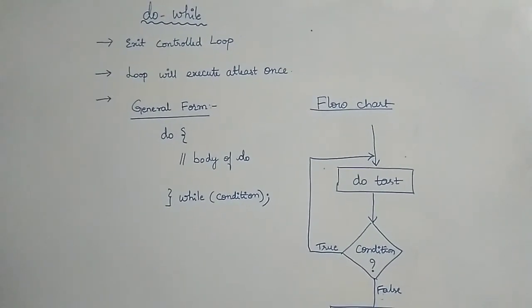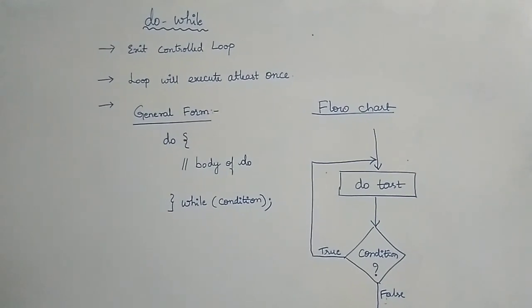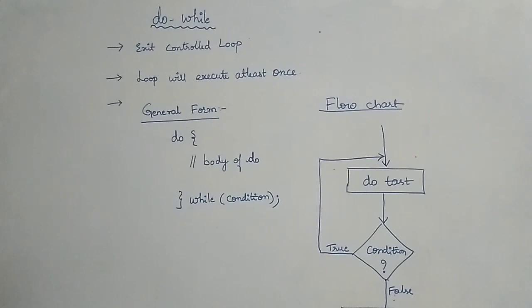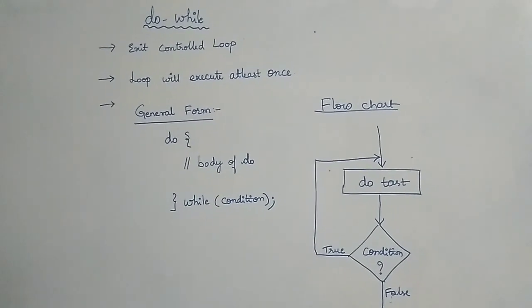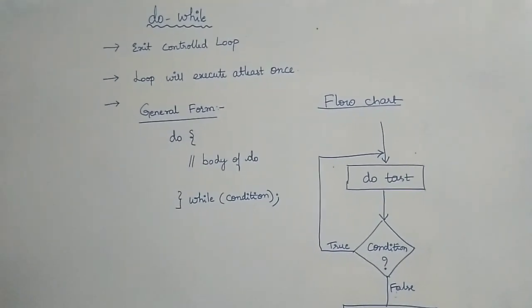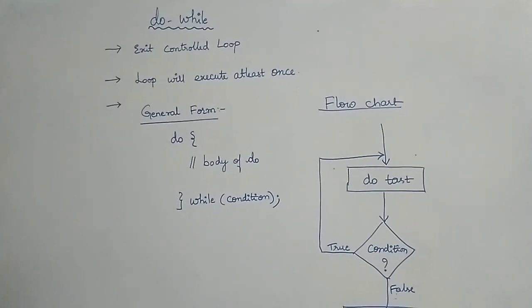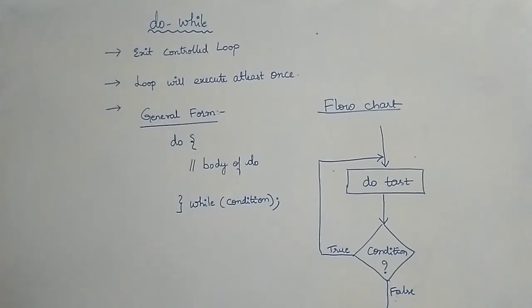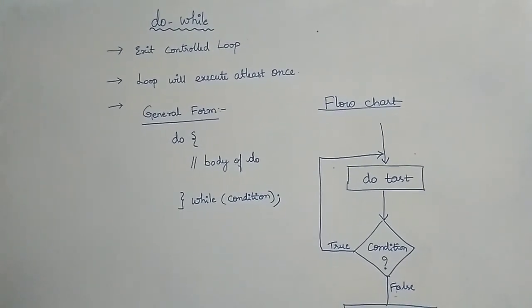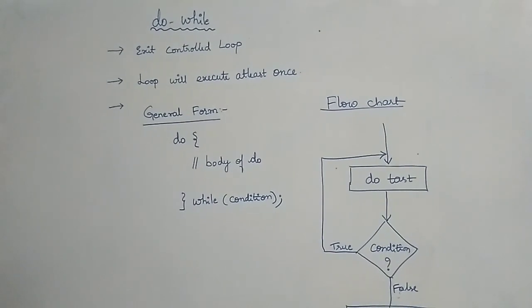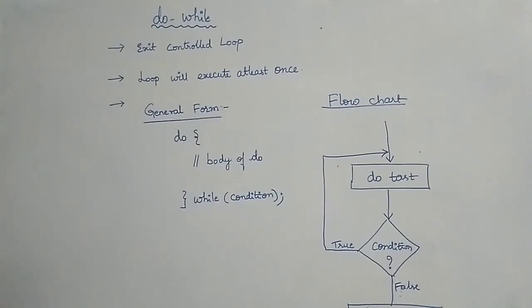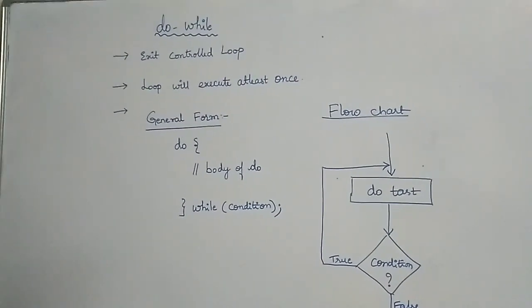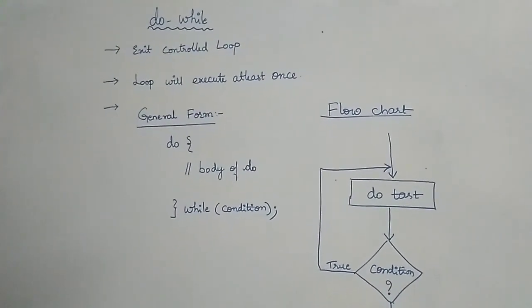Another real-life analogy is going to a restaurant. Irrespective of whether you order food or not, the service person will first show you the menu. After looking at the menu, if you like the food you will order; otherwise you leave and try another restaurant. Similarly, do-while executes the loop body at least once.